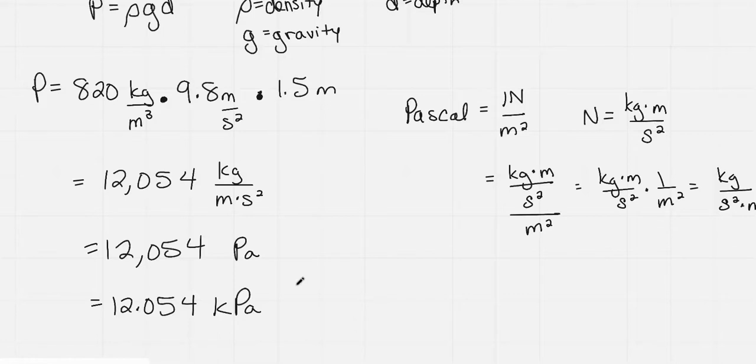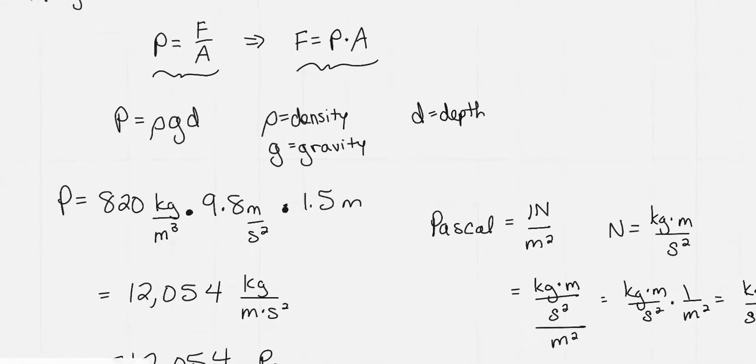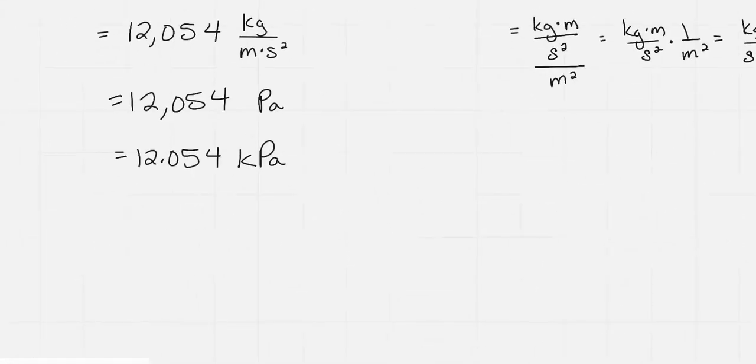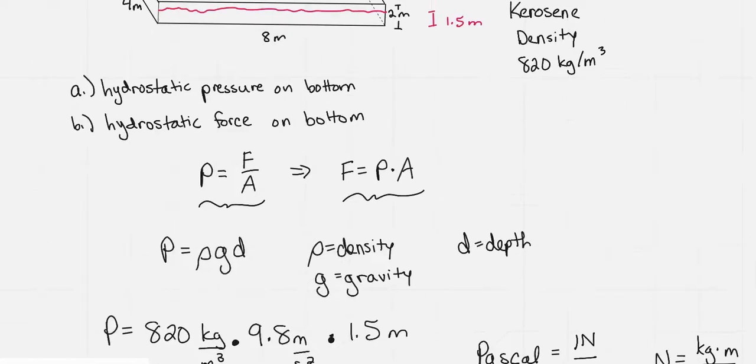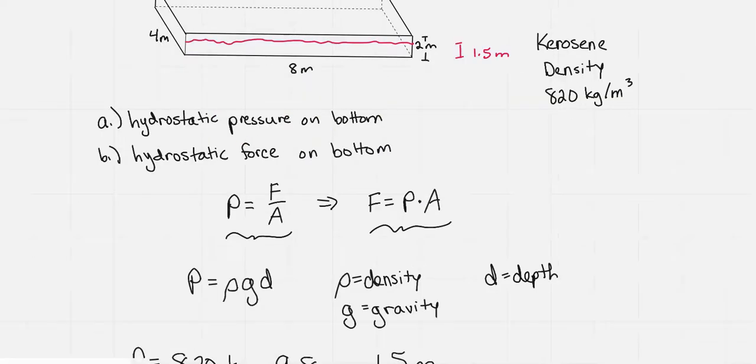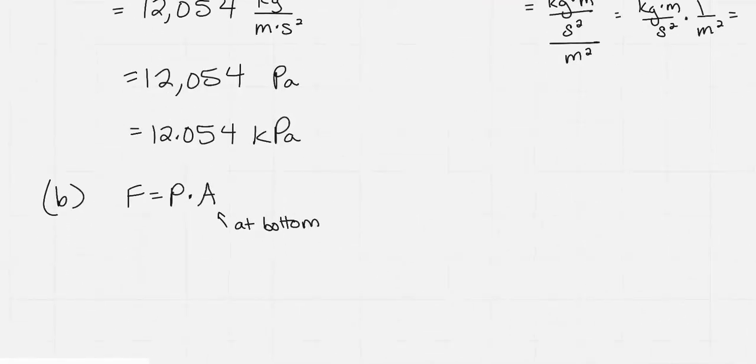Now the hydrostatic force on the bottom, if we go back up to our equations, our force was equal to pressure times area. So if we want to look at part B, the hydrostatic force at the bottom, we have force equals pressure times area. So the pressure we already got, that's the number just above. But the area, this is the area at the bottom. And if we go back up to our tank and look, it had a width of four and a length of eight. So if we just look at that area, it's going to be four meters times eight meters.